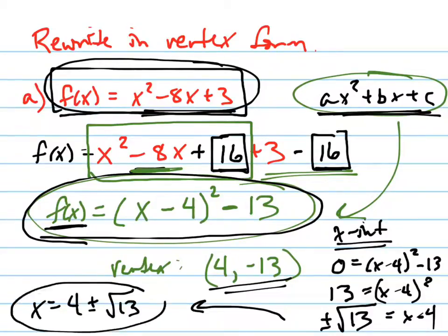Hey, guess what? There are your x-intercepts. And it also jives. It makes sense with the axis of symmetry, because where is the axis of symmetry?